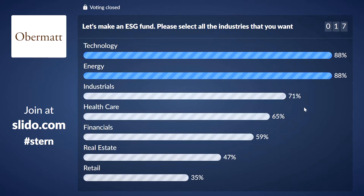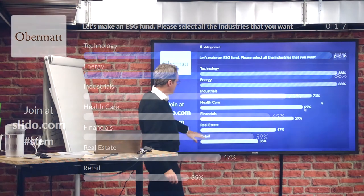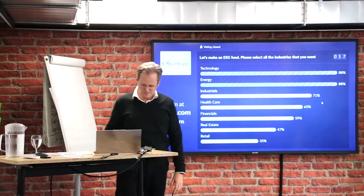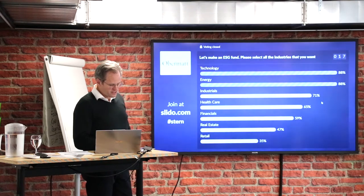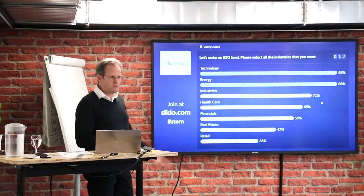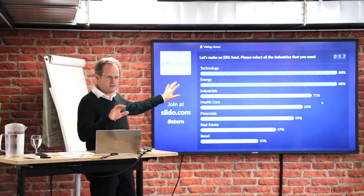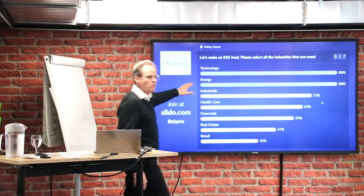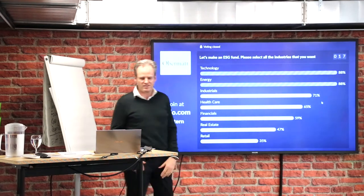Okay. So we would make a fund together — our own ESG fund here in this room — that would focus on technology and energy, has a little bit of healthcare, has very little retail, and still a little bit of financial services. This is our fund. We execute this, and we use this as a weighting for the industries on top of the ESG factors.